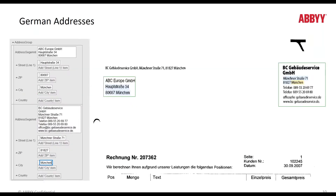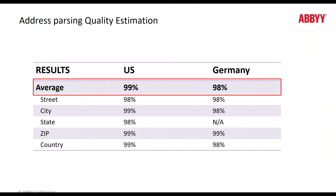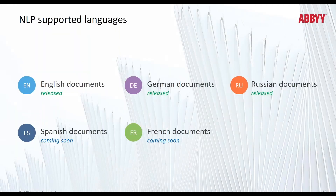Here we have an example with a German address. You can see that the address block has been surrounded and the individual address components have been extracted. The resulting quality is quite high for both US and German addresses. We currently support English, German, and Russian documents, and we have plans to support Spanish and French documents coming up soon.